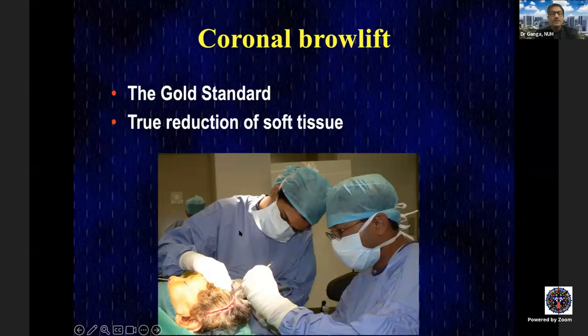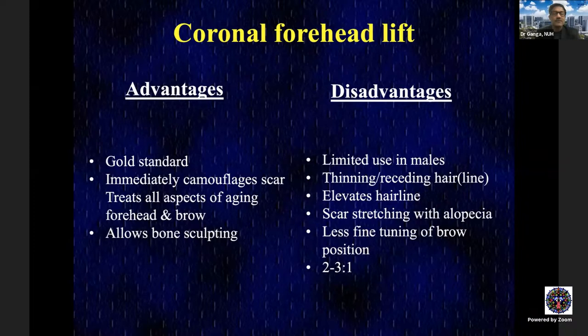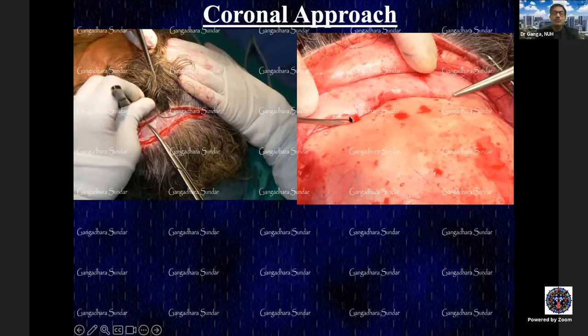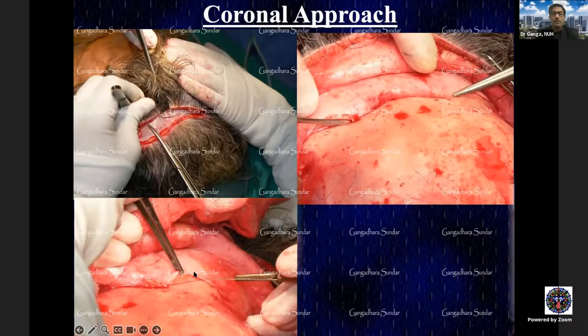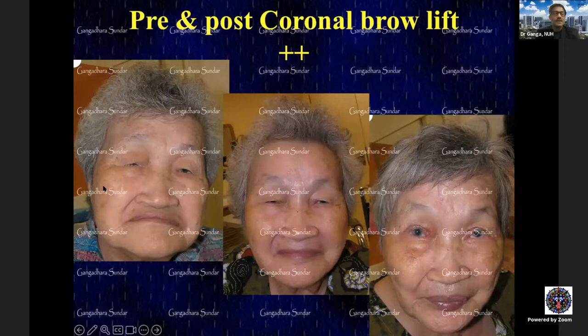The gold standard of brow lift procedures is the coronal brow lift, considered similar to an external DCR. It allows addressing of multiple facial regions through one incision — the same incision used in craniofacial surgeries and complex orbitofacial fractures. The disadvantage is that the incision is remote from the desired elevation site, requiring more dissection and more skin resection for equivalent elevation. Surgical steps include subperiosteal dissection preserving the supraorbital and supratrochlear nerves, periosteal release, excision, and fixation.